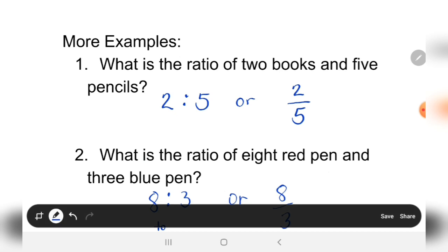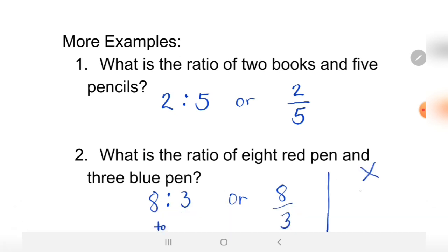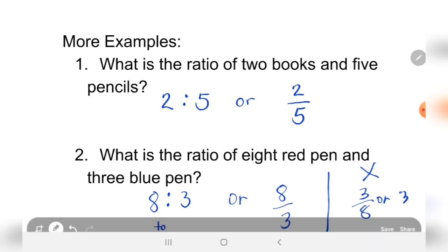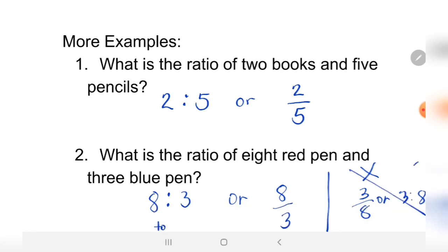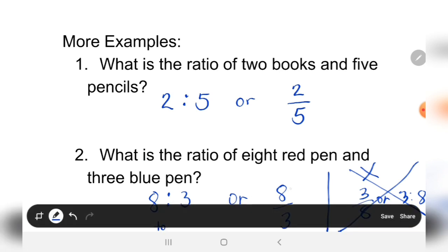This is not correct: three over eight or three to eight - this is wrong. The answer is only this: you can choose either eight to three or eight over three.